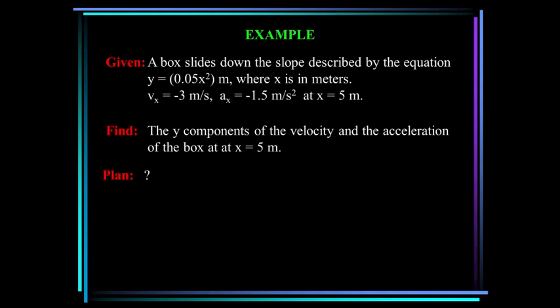A box slides down a slope described by the equation y equals 0.05x squared meters. At x equals 5 meters, the velocity in x is minus 3 meters per second and acceleration in x is minus 1.5 meters per second squared. We want to find the y components of the velocity and acceleration of the box when x equals 5 meters — that is, y-dot and y-double-dot.